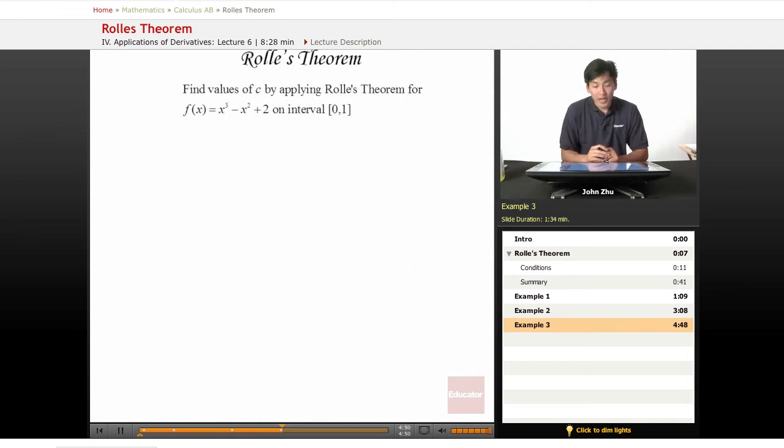Looking at another example, we're looking for values of c once again that fit Rolle's theorem for this function on a certain interval. Well, let's just be very methodical about this and apply the theorem after we check the conditions.